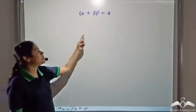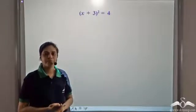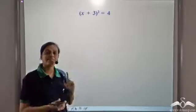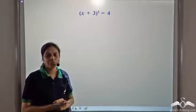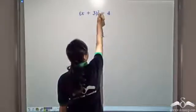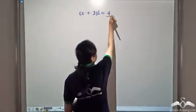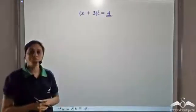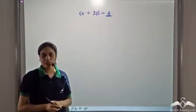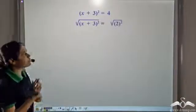We need to solve this equation: (x + 3)² = 4. You may be tempted to expand the left hand side and then simplify it to solve the equation. But observe that the left hand side is a perfect square. Also, the right hand side is equal to 4, which is also a perfect square. So we can take the square root of both sides.